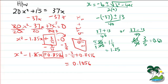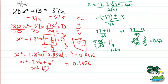On the left side we have x² minus 2xb plus b², which factors into (x minus b)². So we now have (x minus 0.925)² equals 0.1056. All we have to do now is find the square root.